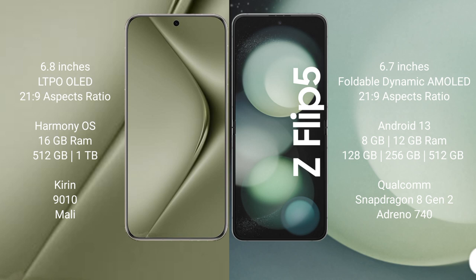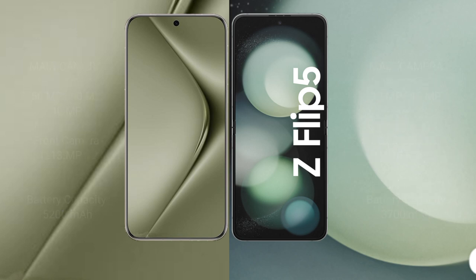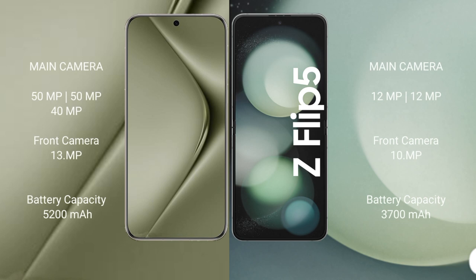The Samsung Galaxy Z Flip 5 comes with 8 GB RAM and 128 GB, 256 GB, or 512 GB internal storage, powered by the Qualcomm Snapdragon 8 Gen 2 processor with Adreno 740 GPU. The Huawei P70 Ultra features a rear triple camera setup: 15x plus 15x plus 40x, with a 13x front camera. The Samsung Galaxy Z Flip 5 features a rear dual camera setup: 12x plus 12x, with a 13x front camera.